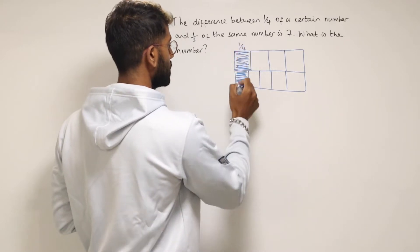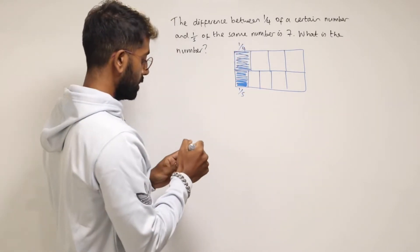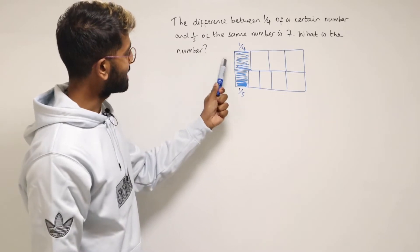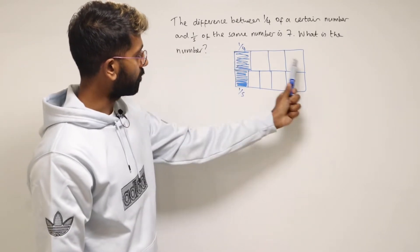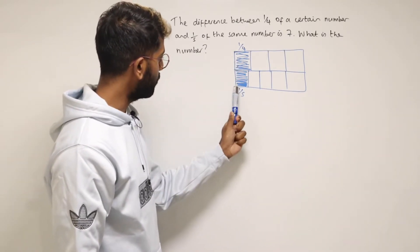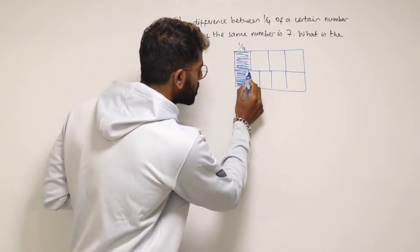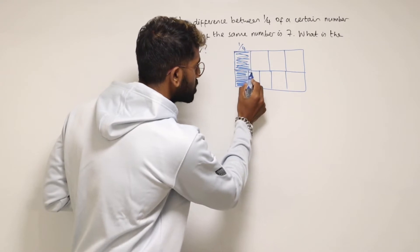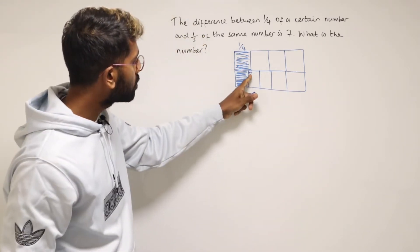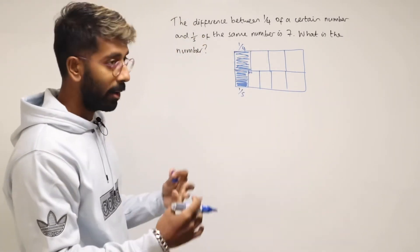So here's a quarter and this is a fifth. So what we're told is that the difference between a quarter of the whole number and a fifth of the whole number is seven. And so the difference between a quarter and a fifth is just this little gap over there. But how big is that gap?